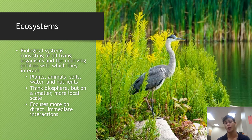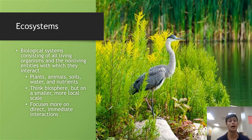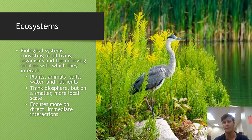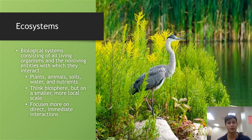Now that we have an idea of what a system is and how feedback loops can change, alter, or stabilize a system, we can dive into ecosystems. Ecosystems are biological systems consisting of both living organisms and the abiotic, or nonliving, components with which they interact. Biotic means living — think of the puppy from the introduction lecture — and abiotic means nonliving, like the pet rock.